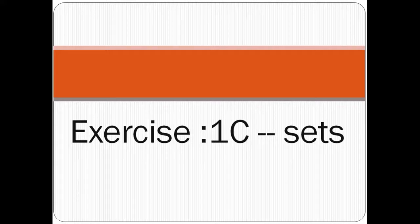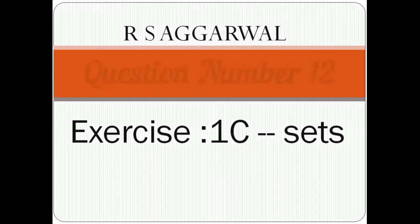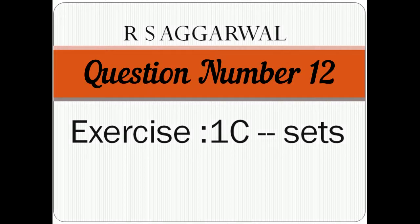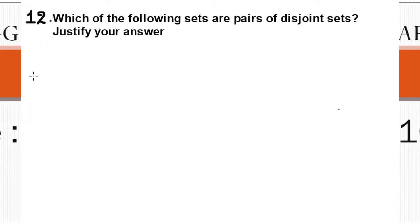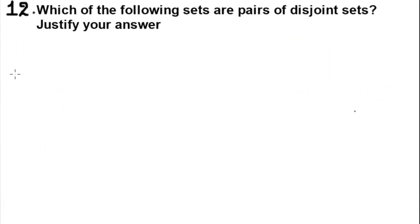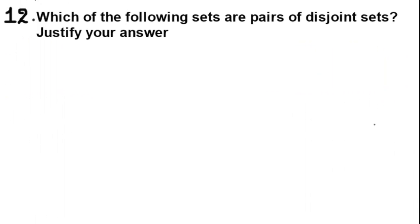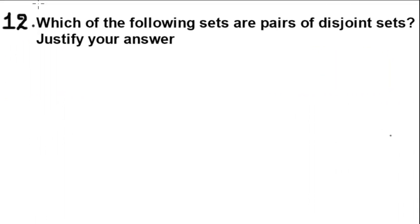This video is the solution of exercise 1c, Sets, from R.S. Aggarwal book, question number 12. Let's start the solution. Question number 12 is: which of the following sets are pairs of disjoint sets? Justify your answer.